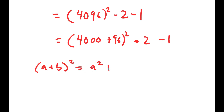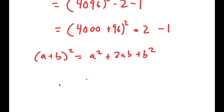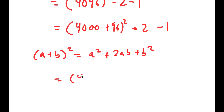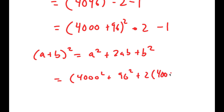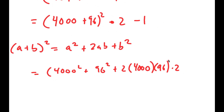...this is equal to a squared plus 2ab plus b squared. So this is going to equal 4000 squared plus 96 squared plus 2 times 4000 times 96, and I have this times 2 minus 1.